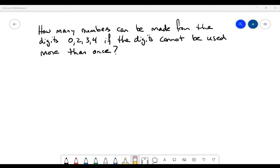Okay, hi everybody. So I had a request to do this question with a tree diagram instead. How many numbers can be made from the digits 0, 2, 3, 4 if the digits cannot be used more than once? We're going to do this with a tree diagram instead of a permutation normally.